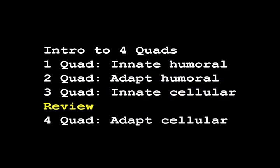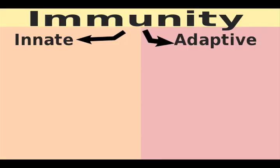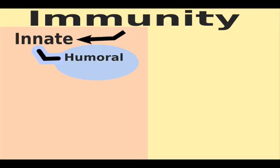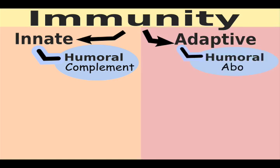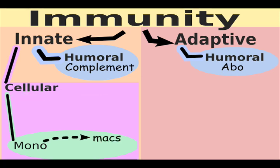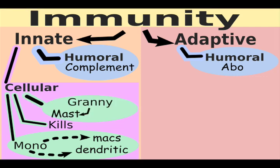Quick review before the last quadrant: immunity is innate or adaptive; innate and adaptive are divided into humoral or cellular. Innate humoral involves complement; adaptive humoral involves antibodies; innate cellular involves 'mono kills granny.' Monocytes grow up to be macrophages or dendritic cells; kill refers to natural killer cells; and granule refers to either mast or phil cells.